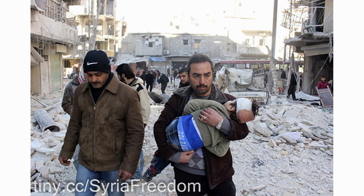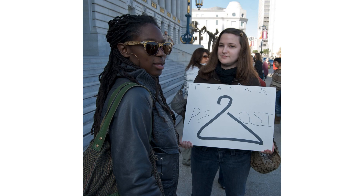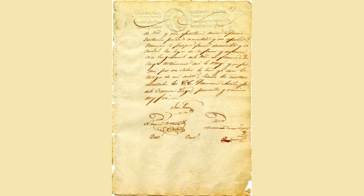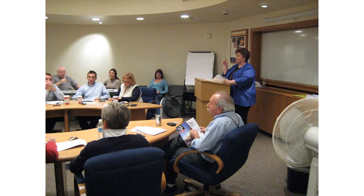Estate planning is also important because it can help ensure that a person's wishes are carried out after their death. A healthcare directive can ensure that a person's wishes for medical treatment are respected in the event that they become incapacitated and unable to make decisions for themselves. A power of attorney can ensure that a person's finances and other affairs are managed according to their wishes if they become unable to do so themselves. Overall, estate planning can help provide peace of mind and ensure that a person's loved ones are taken care of after they're gone.